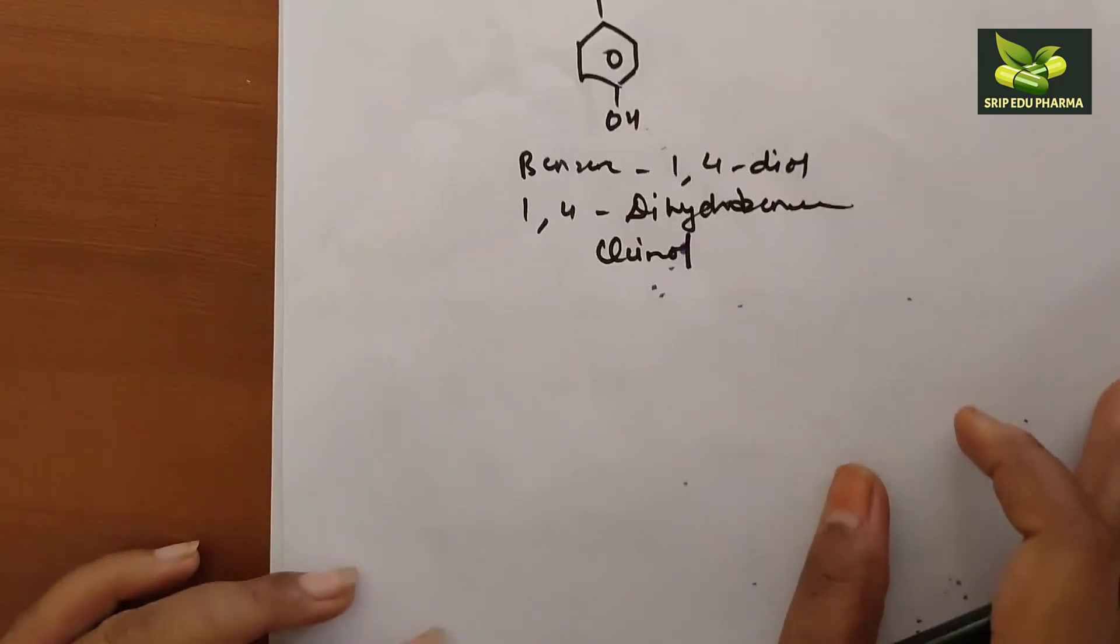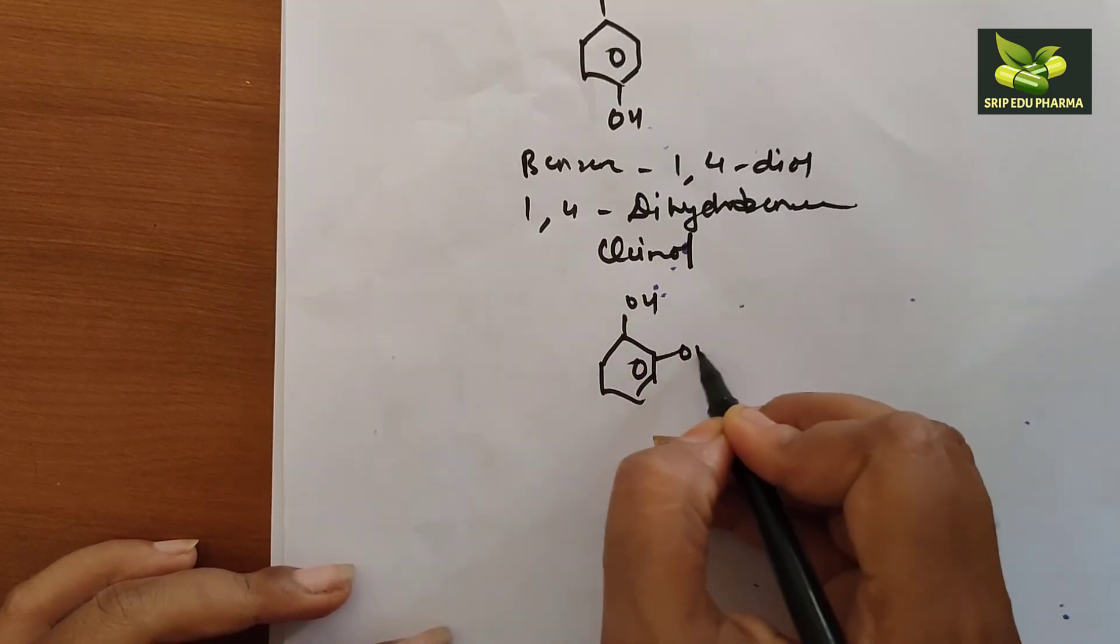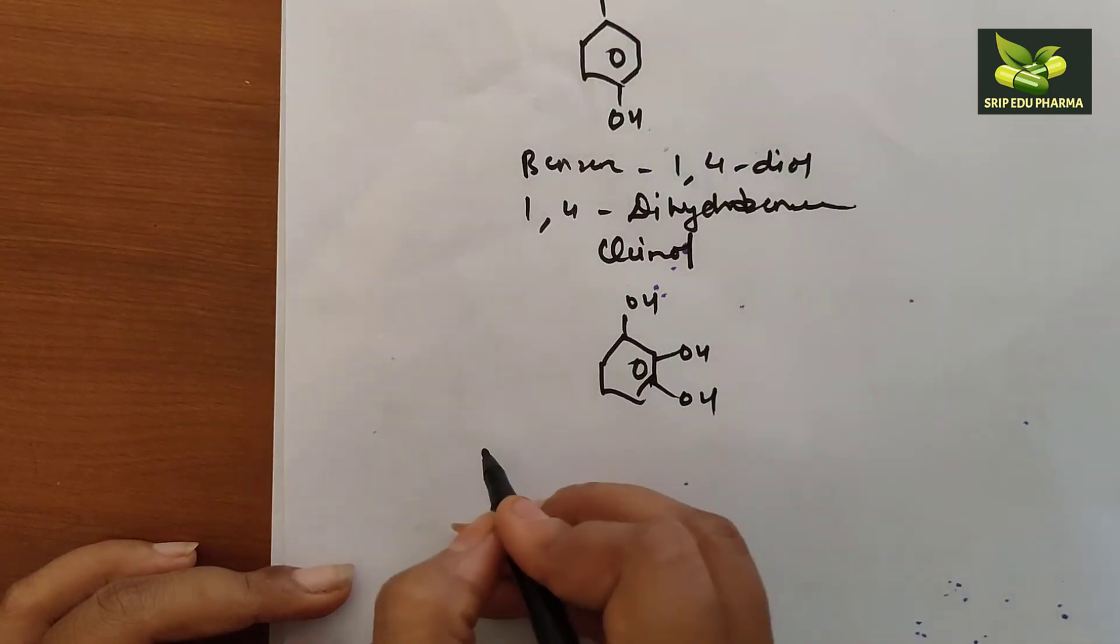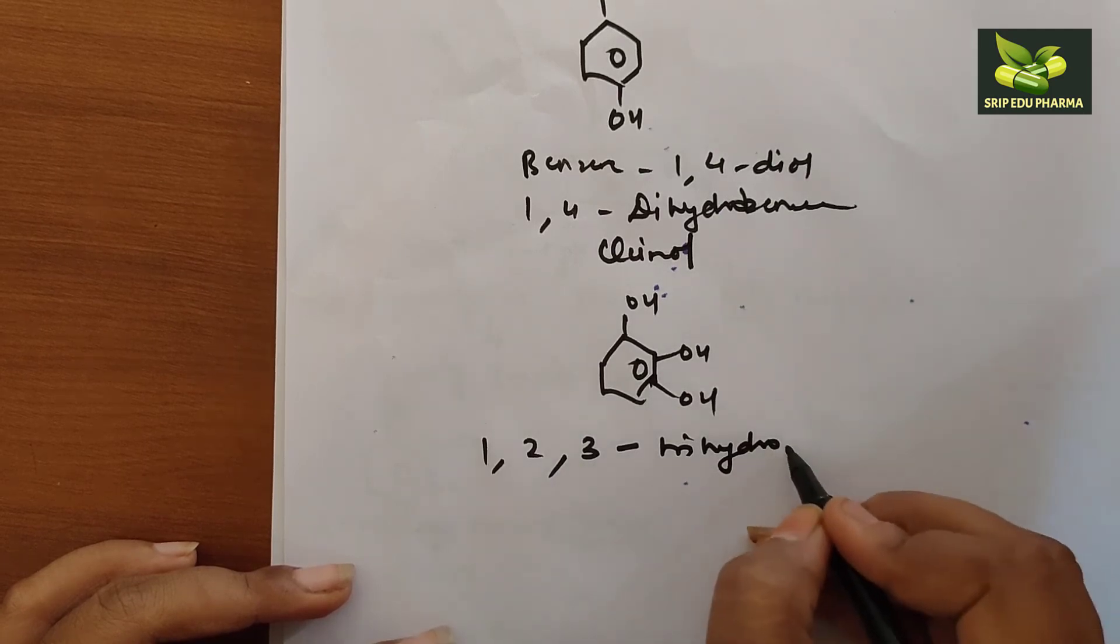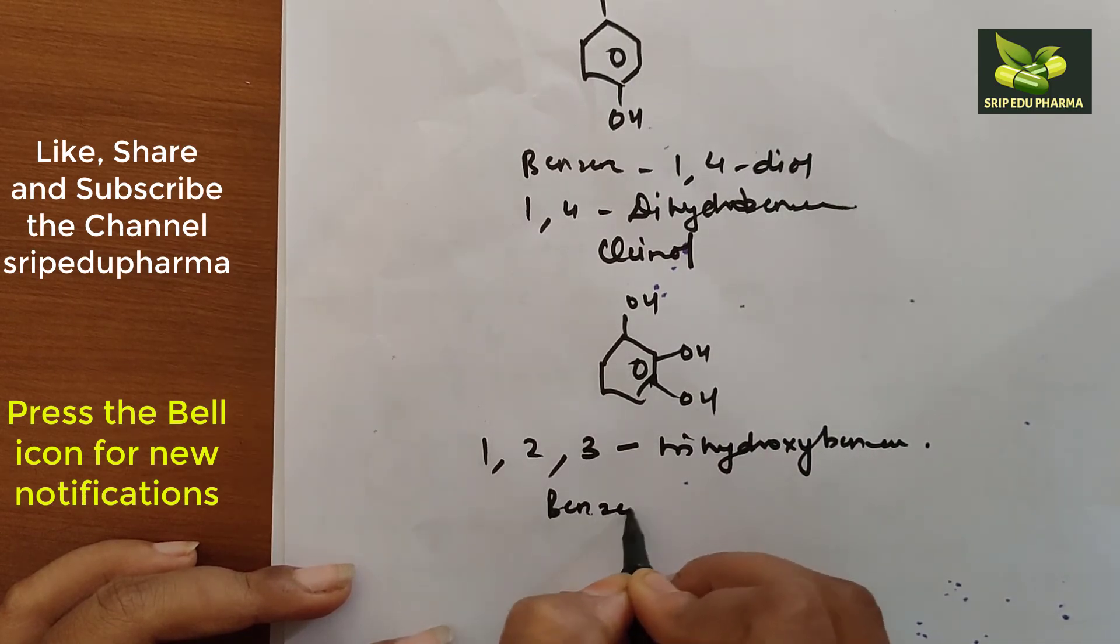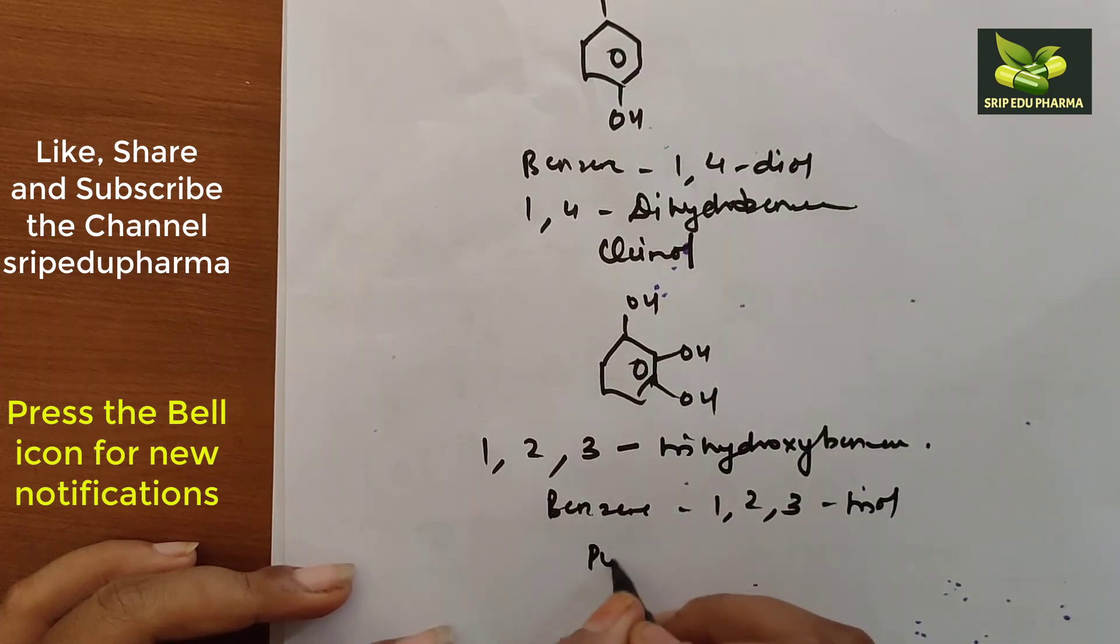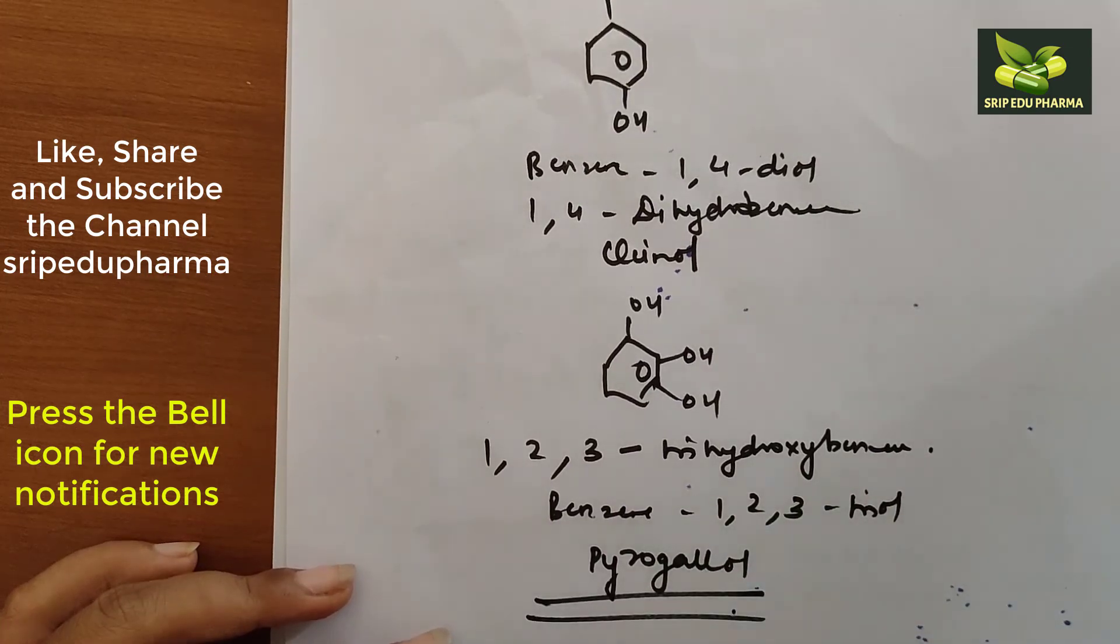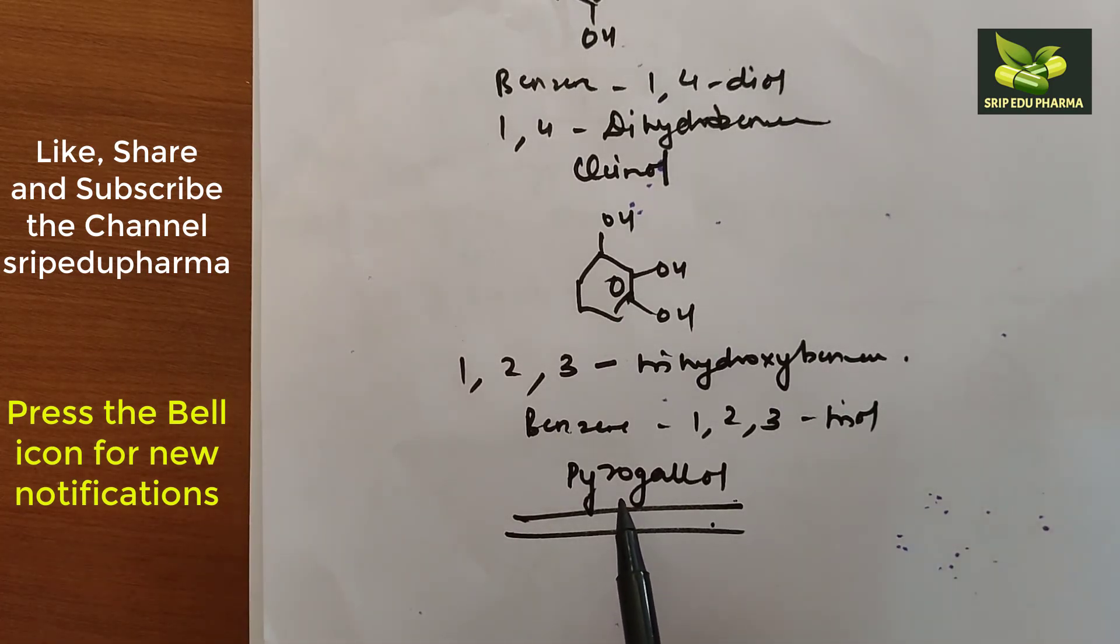This is called phenol. Another example is this is OH, this is OH, this is OH. This is 1,2,3-trihydroxybenzene, or benzene 1,2,3-triol. Its common name is very famous - pyrogallol. So this is all about the introduction and different types of phenols. Hope you like this video.